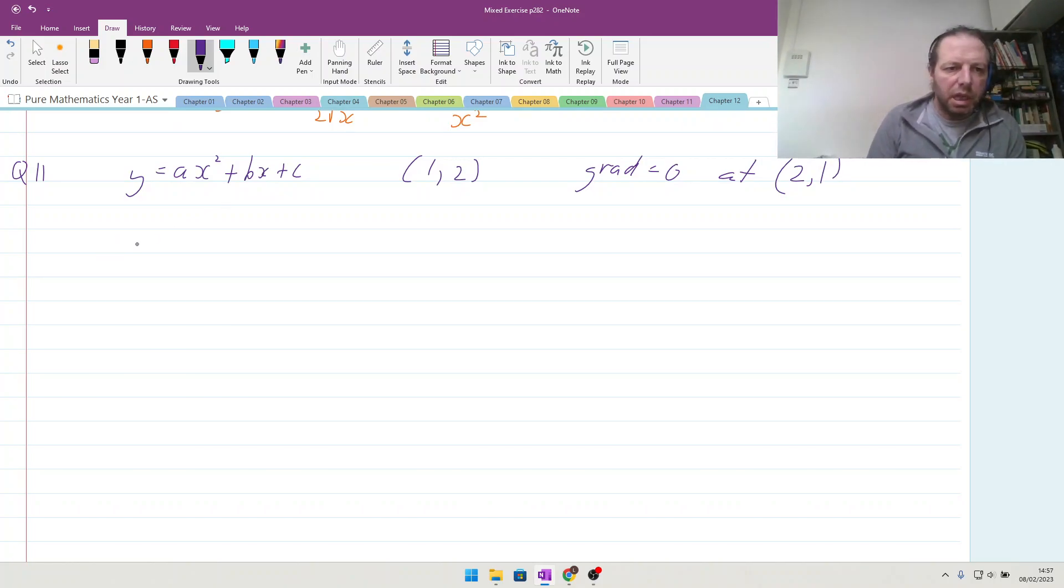Okay, so first things first, let's put this in terms of dy by dx is going to be 2ax, multiplying by the 2, dropping the power by 1, plus b, and the c disappears. So now we've got two things. Substituting (1, 2) into here, we end up with 2 equals a times 1 squared plus b times 1 plus c, and substituting the (2, 1) of the gradient 0, so we know the gradient is equal to 0 when we have our point here. As we put in the x values, we have 2 times a times x which is 2 plus b.